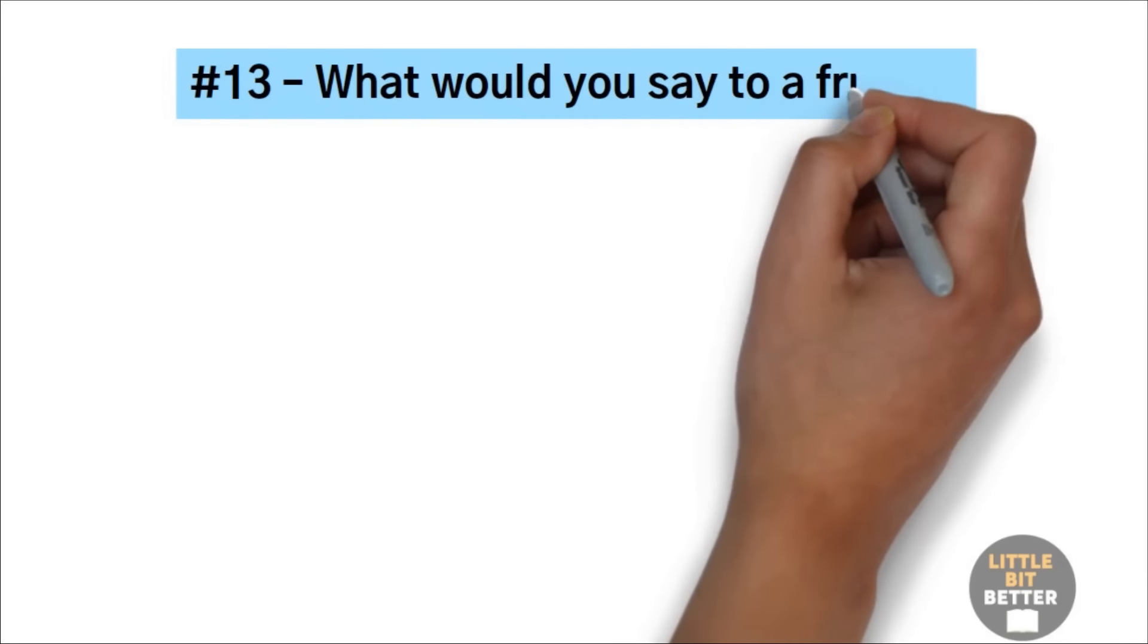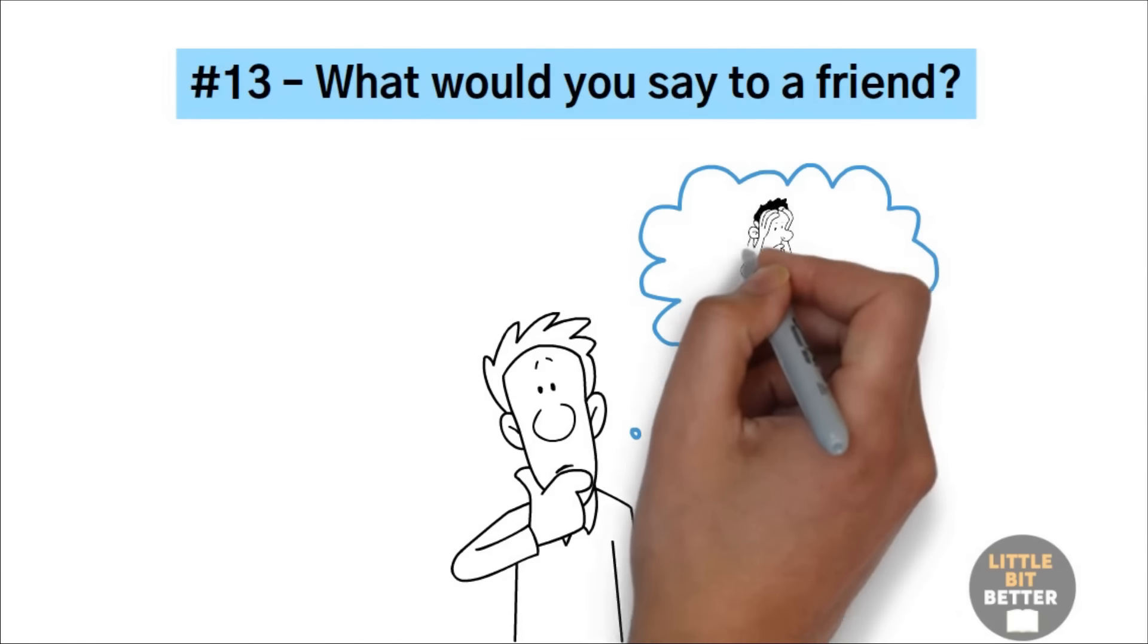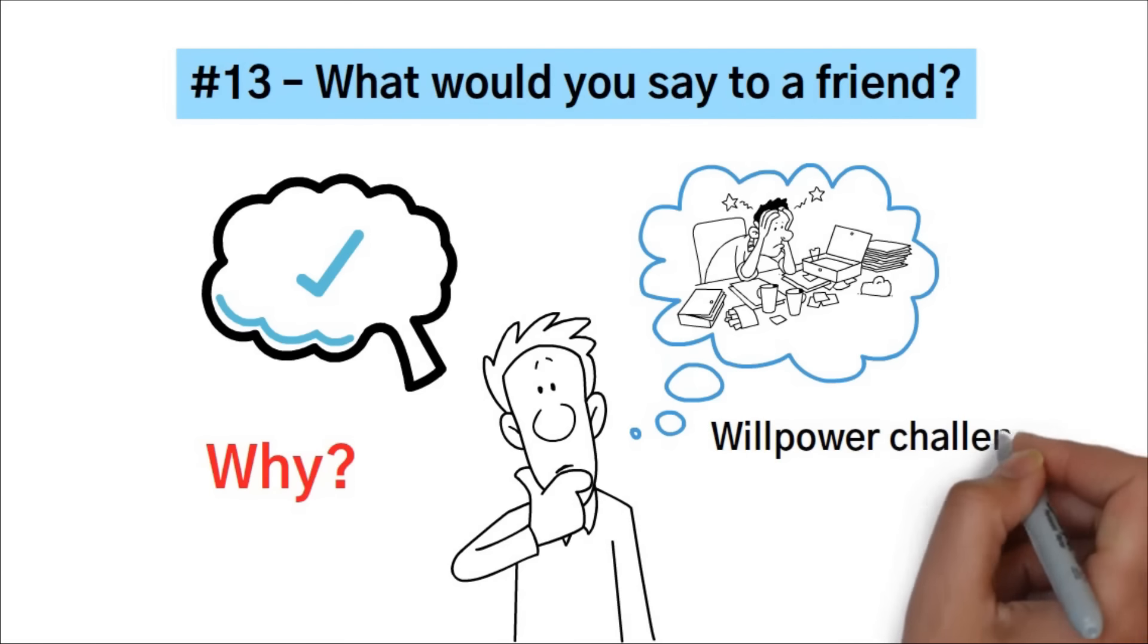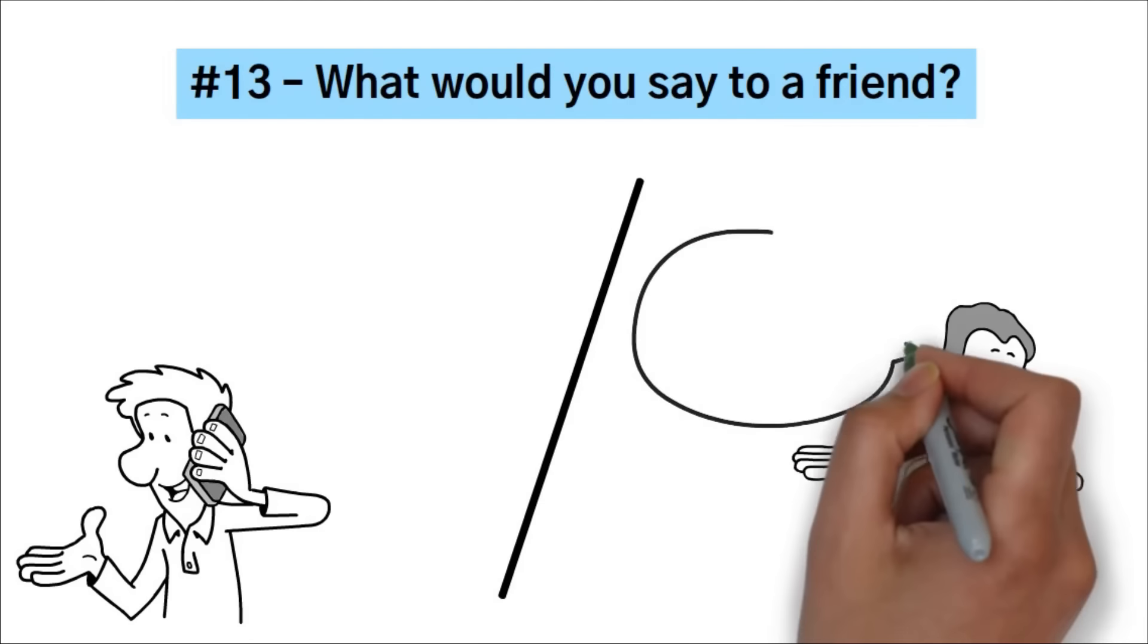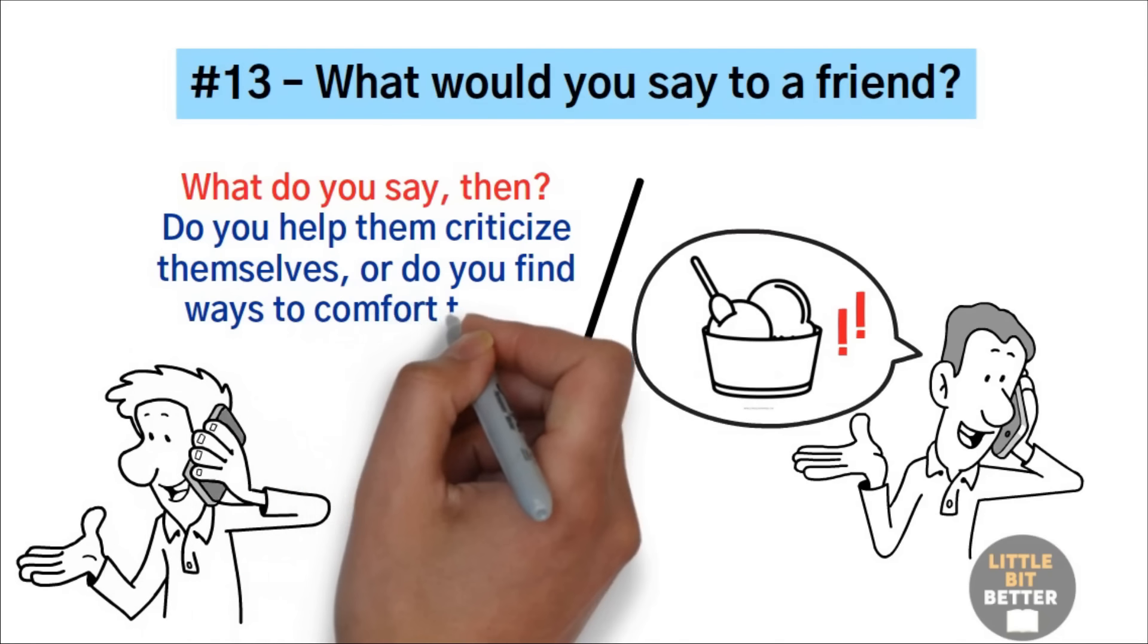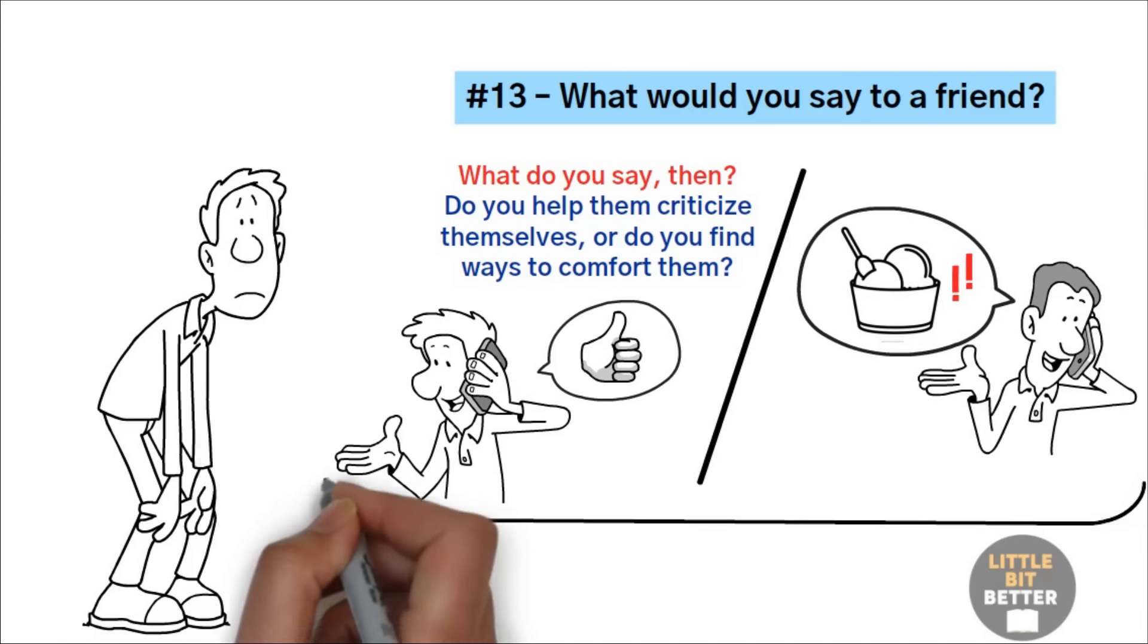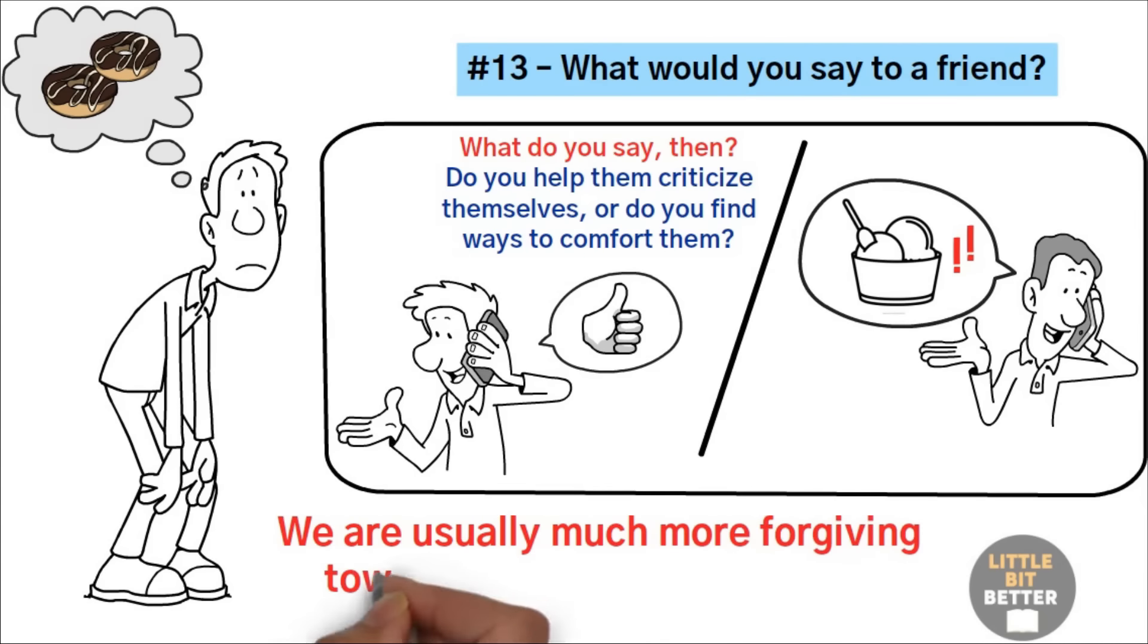Number 13. What would you say to a friend? Think of someone you respect and care about. It can be a member of your family or a friend. Have they been through any struggles lately? Have they had trouble with bad habits or missed deadlines? Well, it's a great thing that you could see them experiencing some of those setbacks. Why? Because it'll help you remember that willpower challenges happen to everyone. Now, suppose that person called you and said they're having exactly the same problem as you. They say, I'm feeling like a failure. I was so stressed with work that I ended up eating a bucket of ice cream yesterday. What do you say then? Do you help them criticize themselves or do you find ways to comfort them? If you're a good friend, I'm guessing you'll tell them that they're great and that slips happen every now and then to everyone. When you have a self-control problem, consider the words you would say to comfort and encourage a friend in the same situation and tell yourself those same words. We are usually much more forgiving towards others than ourselves.